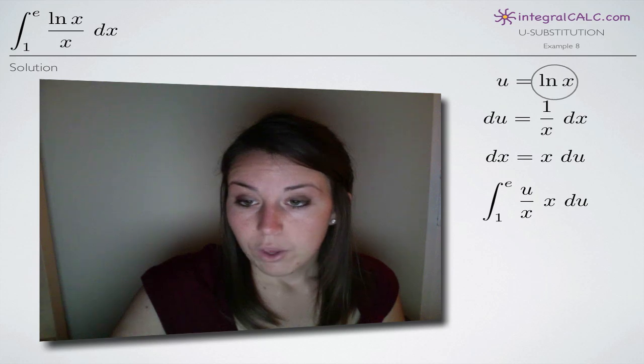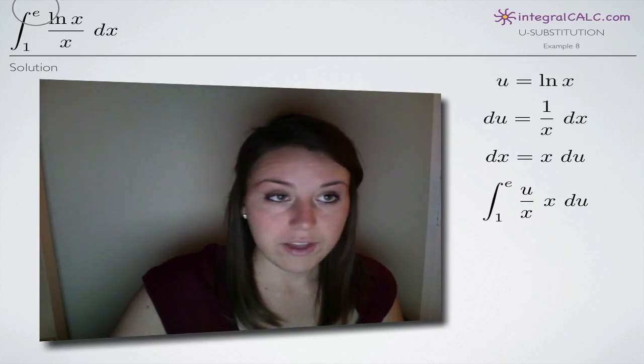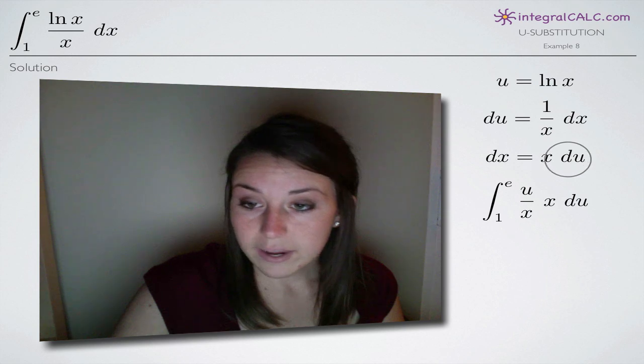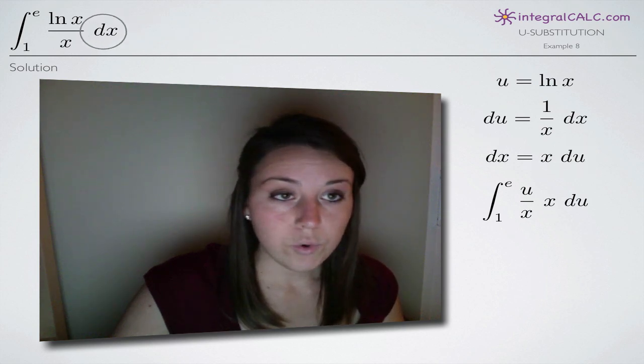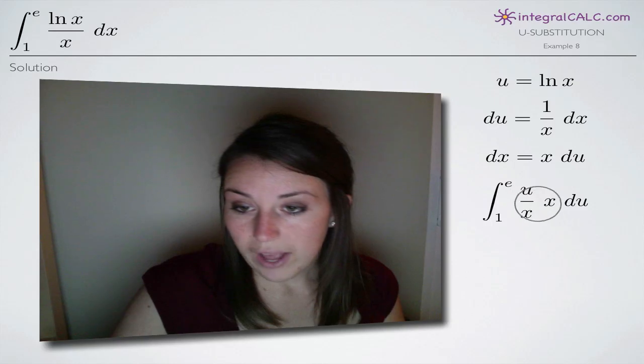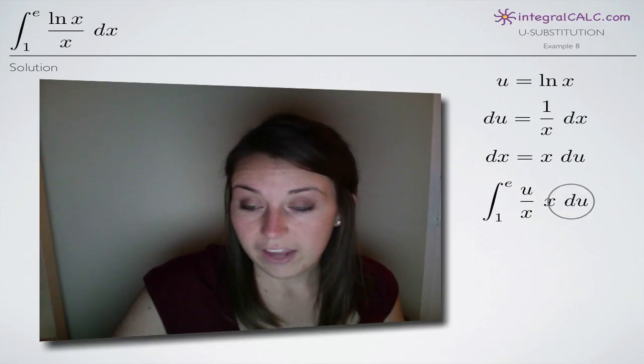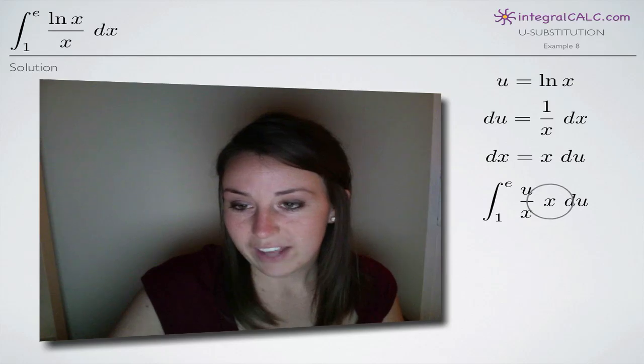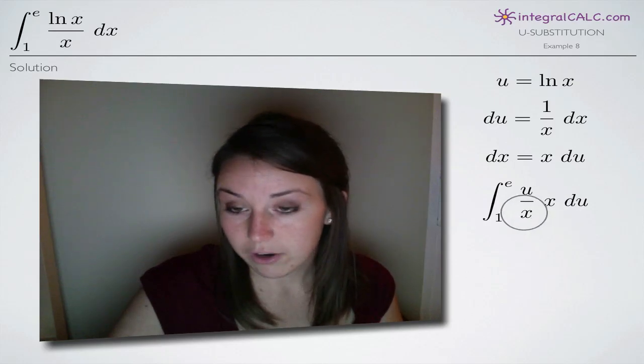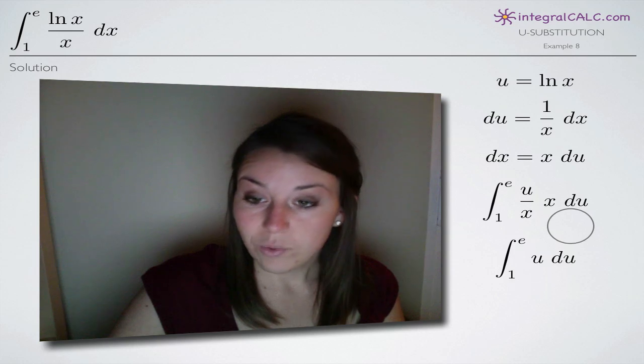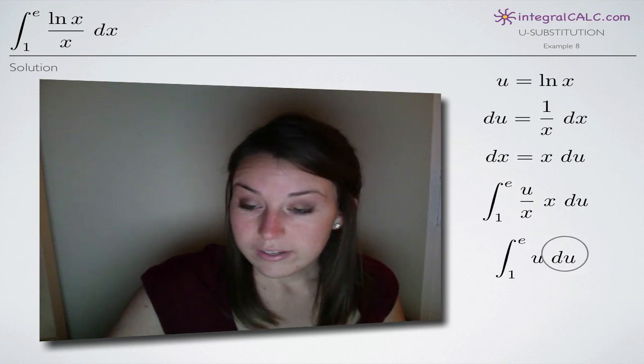So when we do that, we'll plug in u for the natural log of x. We'll plug in u here in our numerator and we'll plug in x times du in for dx here and what that leaves us with is u over x times x du and of course we lucked out here because we have an x in the numerator and in the denominator so the two of those will cancel and what we're left with in our integral is just u times du.